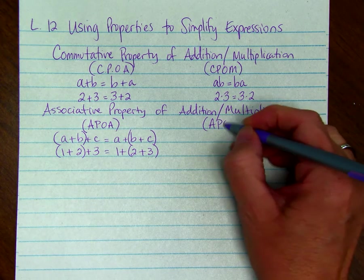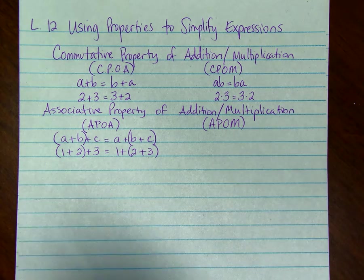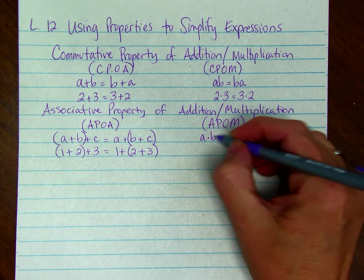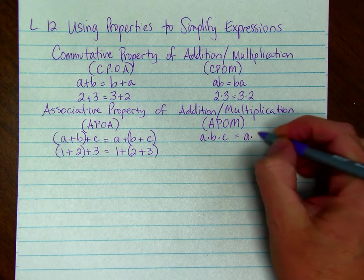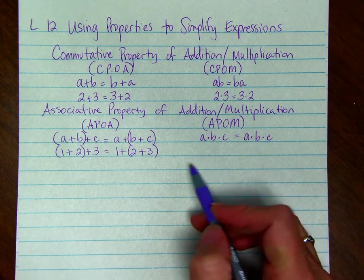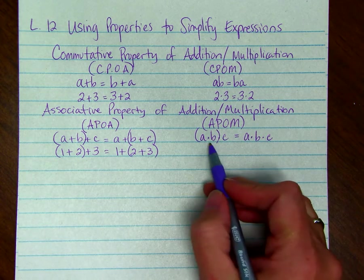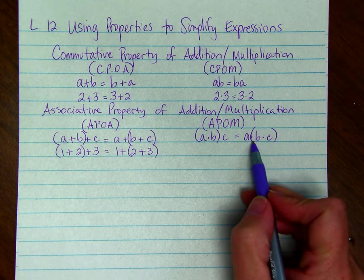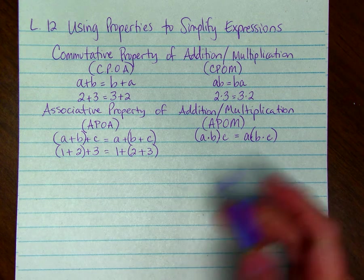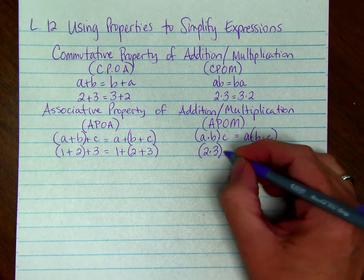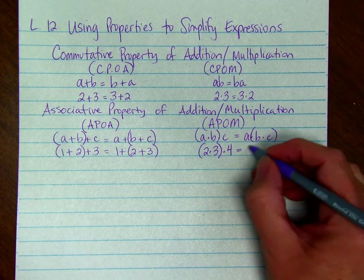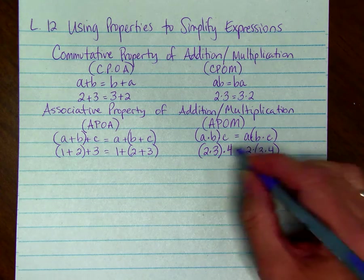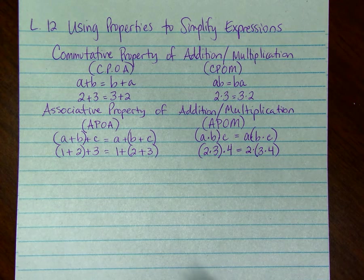The associative property of multiplication, which we can write as APOM, has the same order of numbers A, B, and C. If we multiply the first two and then the last, we get the same answer as if we multiply the last two and then the first. For example, 2 times 3 times 4 is the same as 3 times 4 times 2. This is the associative property.